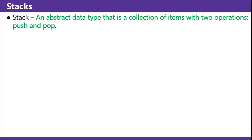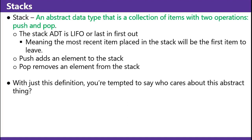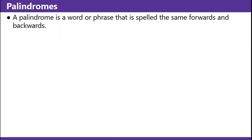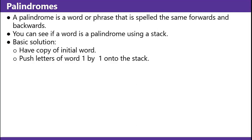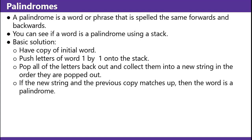Stacks. A stack is an abstract data type that is a collection of items with two operations: push and pop. The stack ADT is LIFO — last in first out — meaning the most recent item placed in the stack will be the first item to leave. Push adds an element to the stack and pop removes an element from the stack. Palindromes: a palindrome is a word or phrase that is spelled the same forwards and backwards. You can see if a word is a palindrome using a stack. Basic solution: have a copy of the initial word, push letters of the word one by one onto the stack, pop all the letters back out and collect them into a new string in the order they are popped out. If the new string and the previous copy match up, then the word is a palindrome.